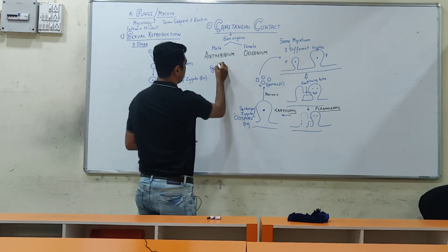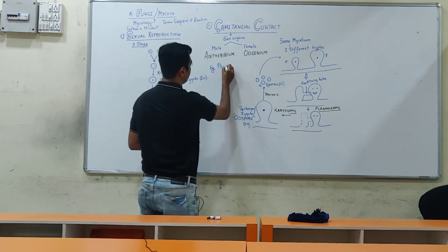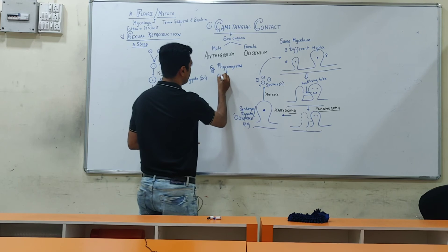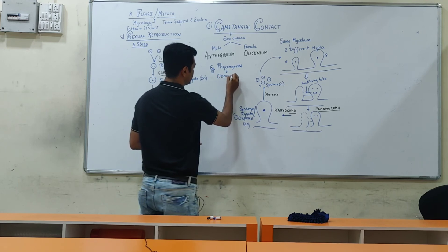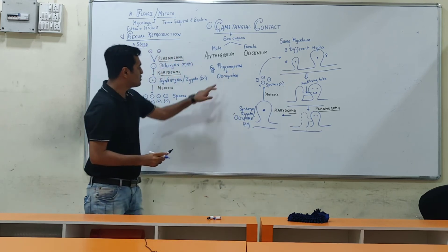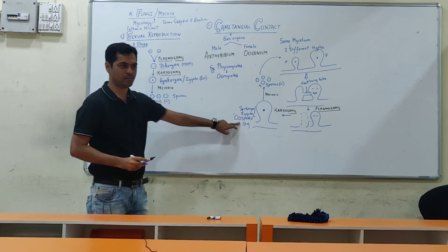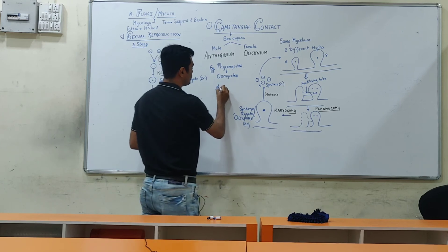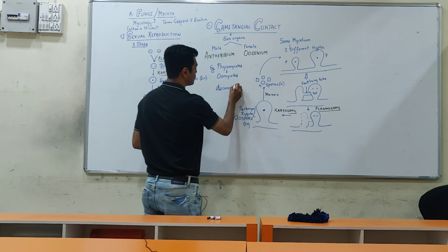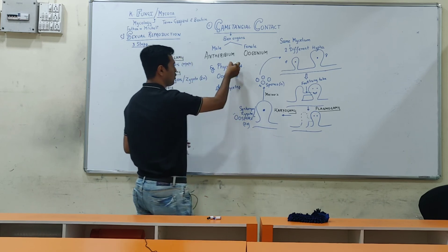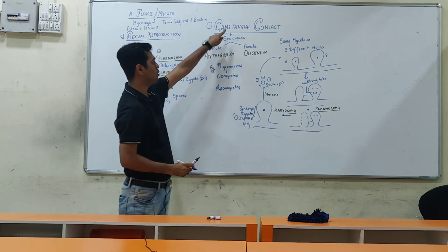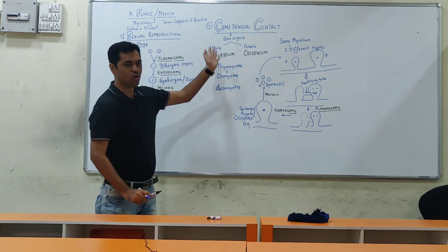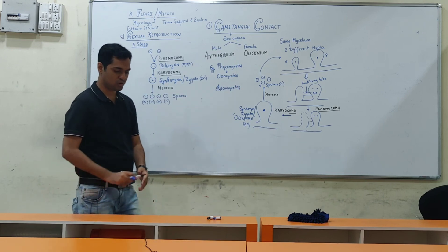So this is the process we studied about Gametangial Contact. This process is observed in one of the classes known as Phycomycetes, specifically its subclass Oomycetes. Apart from Phycomycetes, Gametangial Contact is also observed in the Ascomycetes group. So in Ascomycetes and in the Phycomycetes subclass Oomycetes, sexual reproduction occurs via Gametangial Contact.